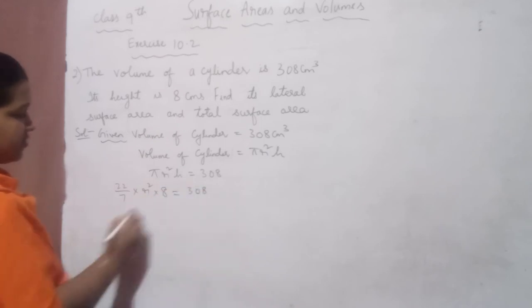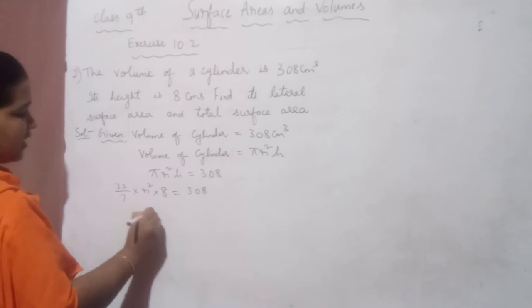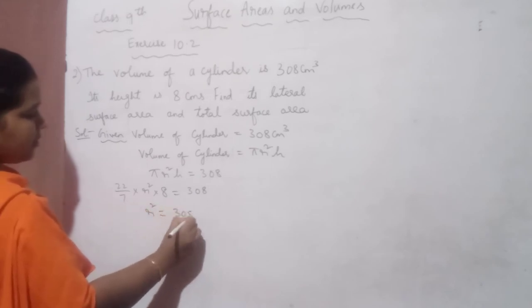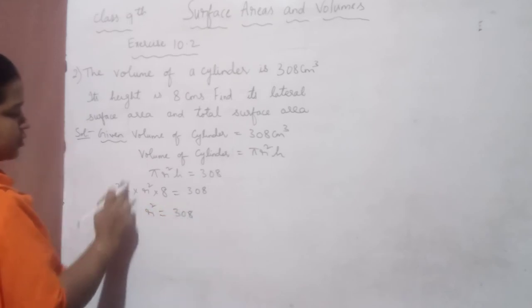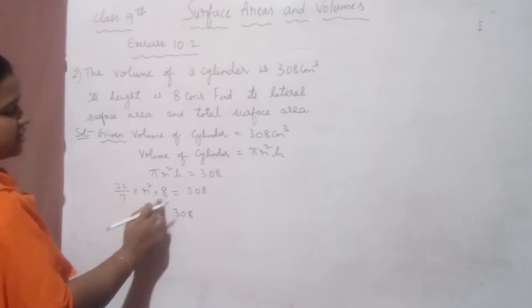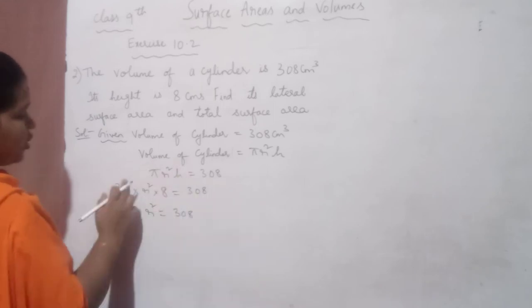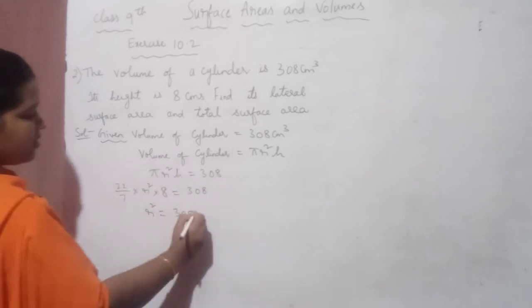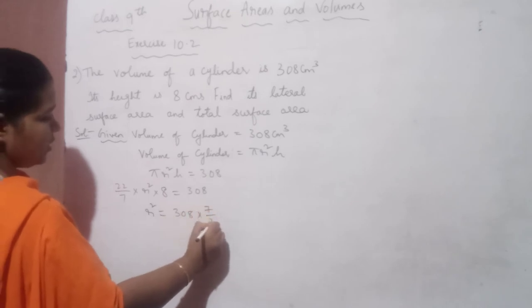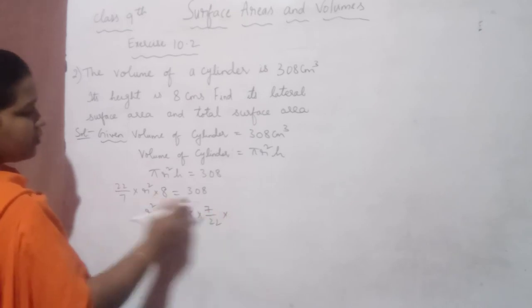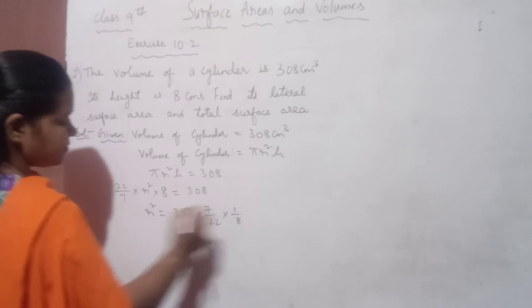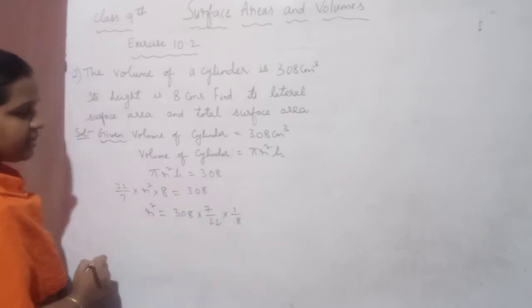Now simplify this. We get R² = 308. Bring 22/7 and 8 from the left side to the right side. 22/7 becomes 7/22, and 8 becomes 1/8.